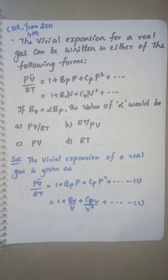In the question paper it was not 1/V, it was into V, so I think that was a printing mistake. It should be 1 + BV/V + CV/V² + ... If BV = αBP, the value of α would be?